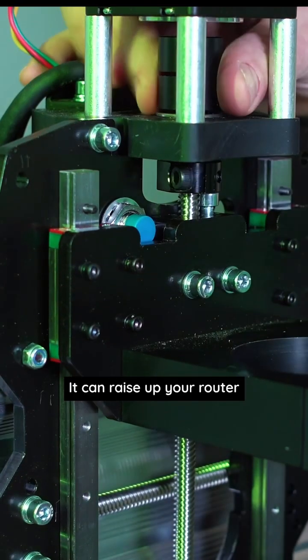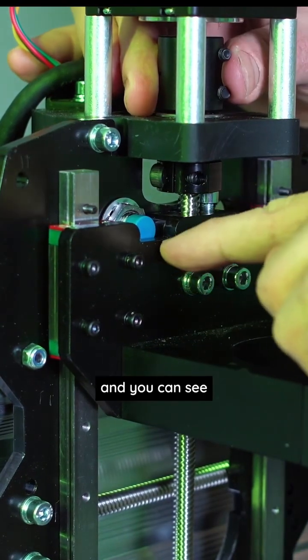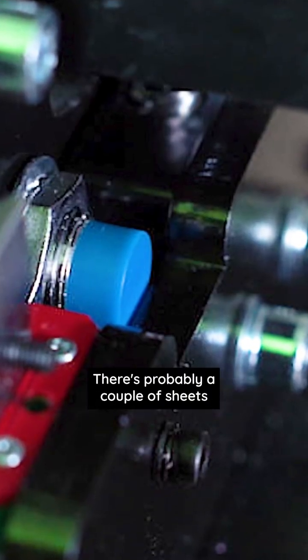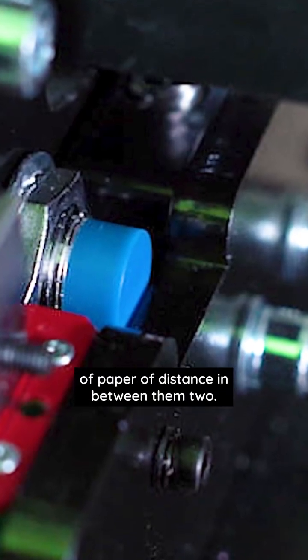You can raise up your router and you can see just how close the sensor is to the router. There's probably a couple of sheets of paper of distance in between the two.